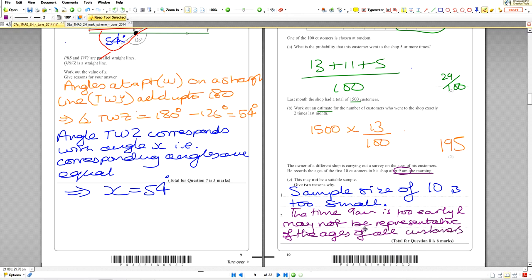And that will give you two marks. So we've got to describe why the time isn't suitable - you attract a particular age group at that time early in the morning - and why the sample size is too small. So that's for the two marks. Okay, we've finished copying that down, folks.